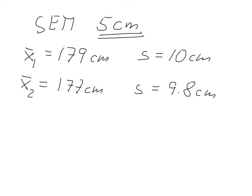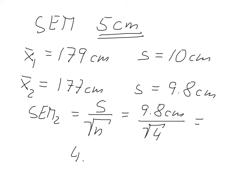And again, we could calculate the standard error. So the standard error for this sample would be S divided by the number of observations. So this would be 9.8 centimeters divided by square root of 4. And that would give us a standard error of 4.9 centimeters. And we could do that as often as we like.